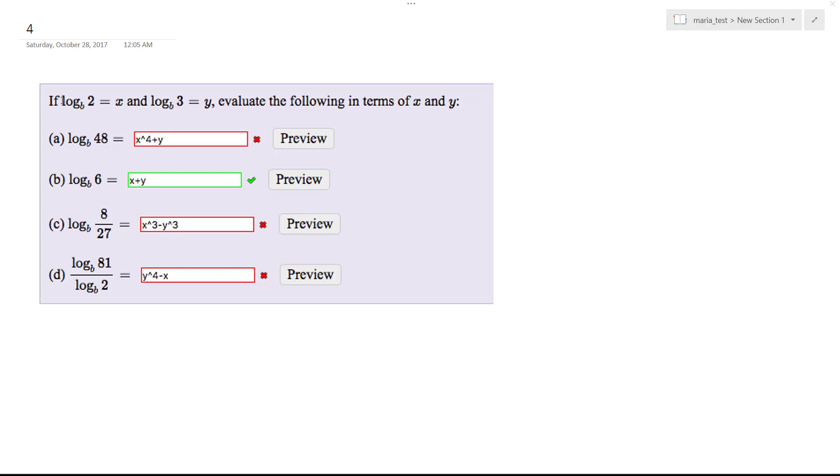So what I have here is abstractions of logarithm functions. I know why these are wrong so I'm going to explain everything to you. First off we want to find log base b of 48. How are you going to represent it in terms of log b of 2 equals x and log b of 3 equals y.